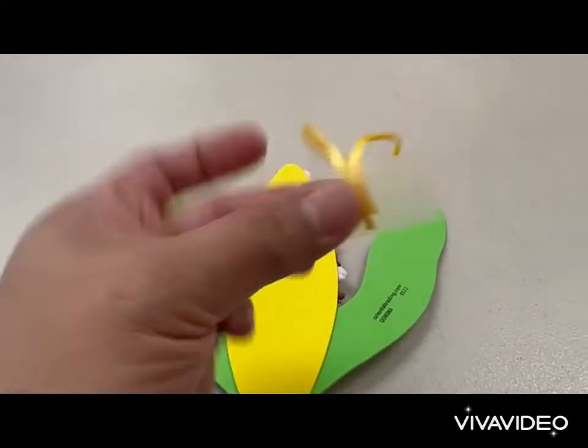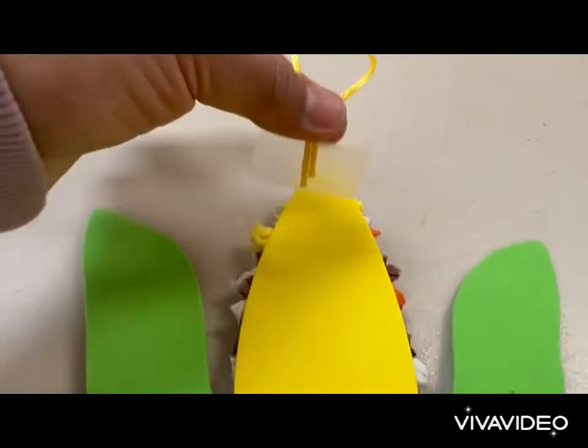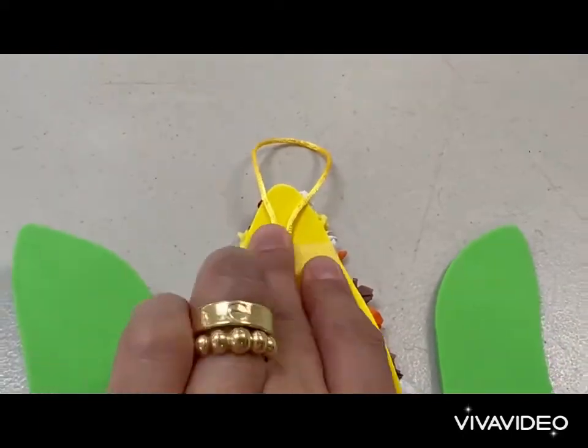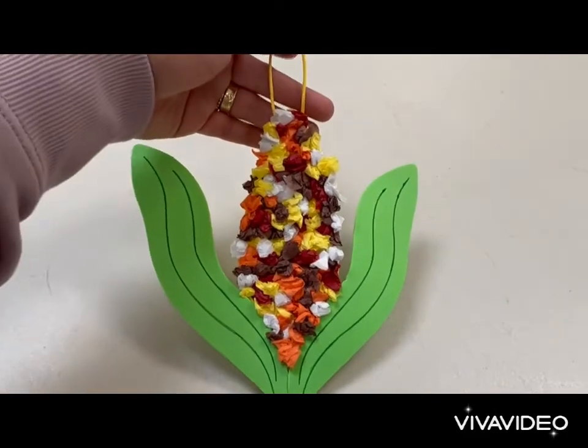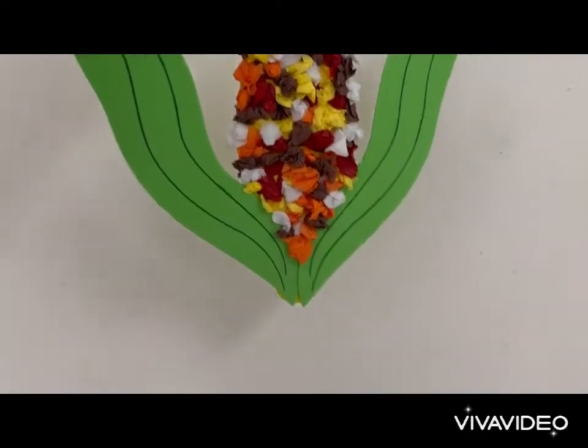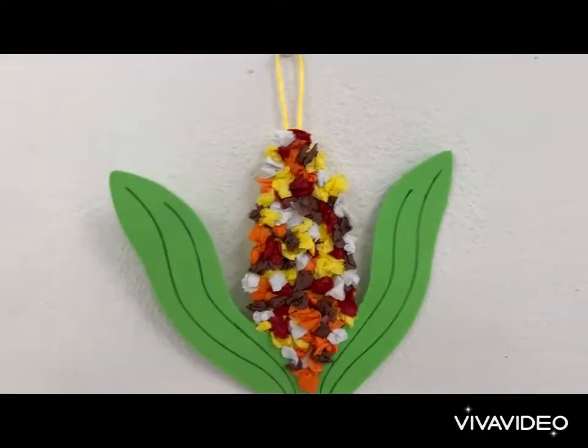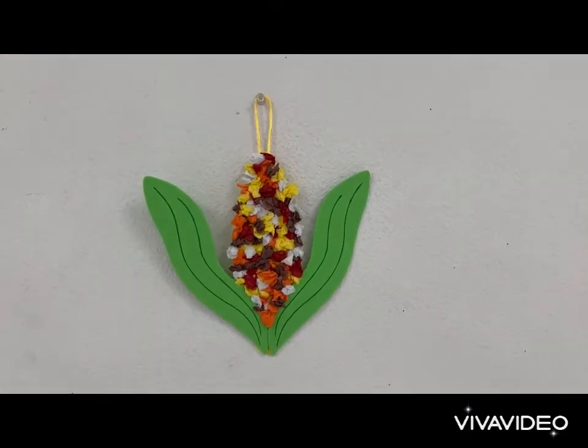Lastly, tape or glue the end of the satin cording at the back of the finished corn. We are done, thank you for watching, bye bye.